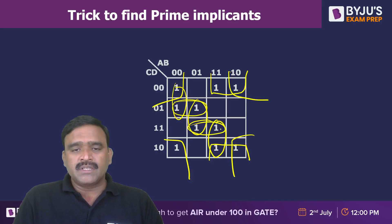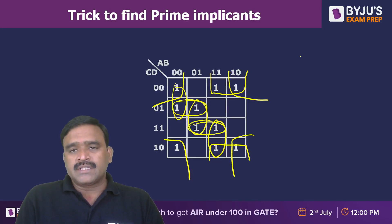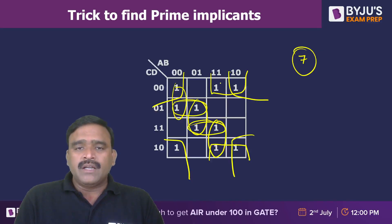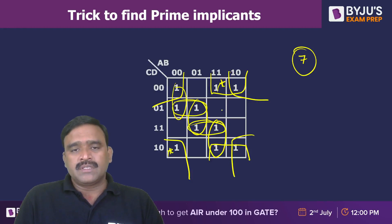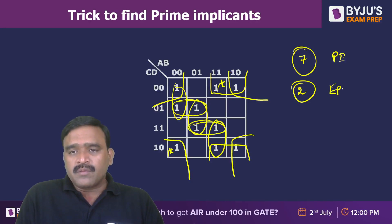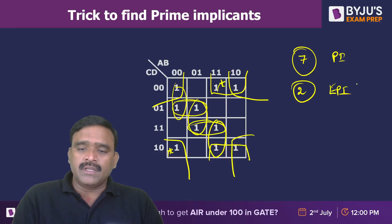And how many pairs? The number of pairs are one, two, three, four, five. So there are a total of seven prime implicants here. Like that we can find out the distinguished ones also. There are two distinguished ones and two essential prime implicants here. The number of prime implicants are seven and the number of essential prime implicants are two.